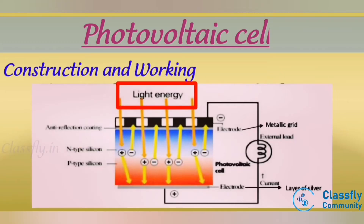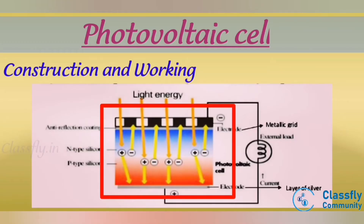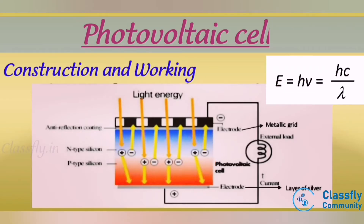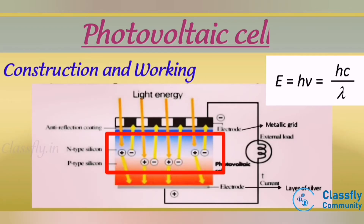When light radiation falls on the P-N junction diode, electron-hole pairs are generated by the absorption of radiation. The energy is given by E = hν, where ν = c/λ, so E = hc/λ. The electrons are made to move across the external circuit, and thus photoelectric current is produced and available for use. A photovoltaic cell generates electricity when irradiated by sunlight.